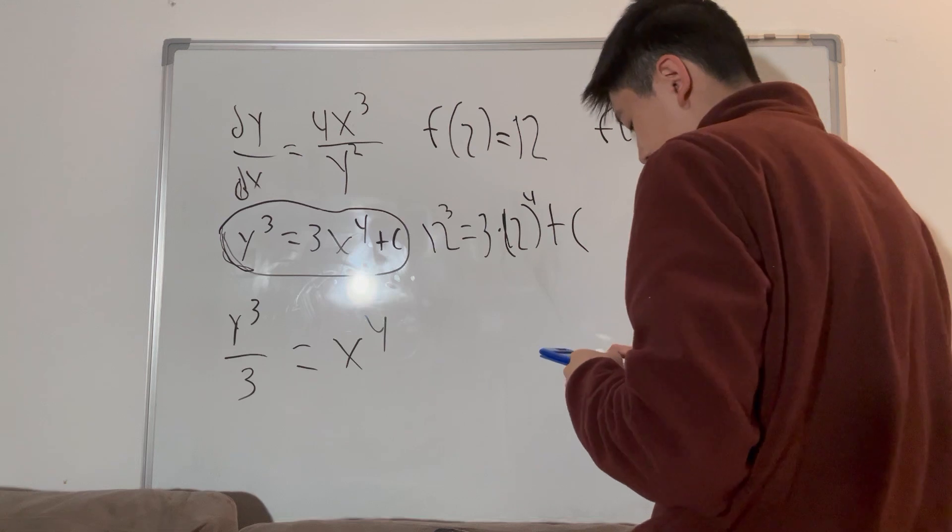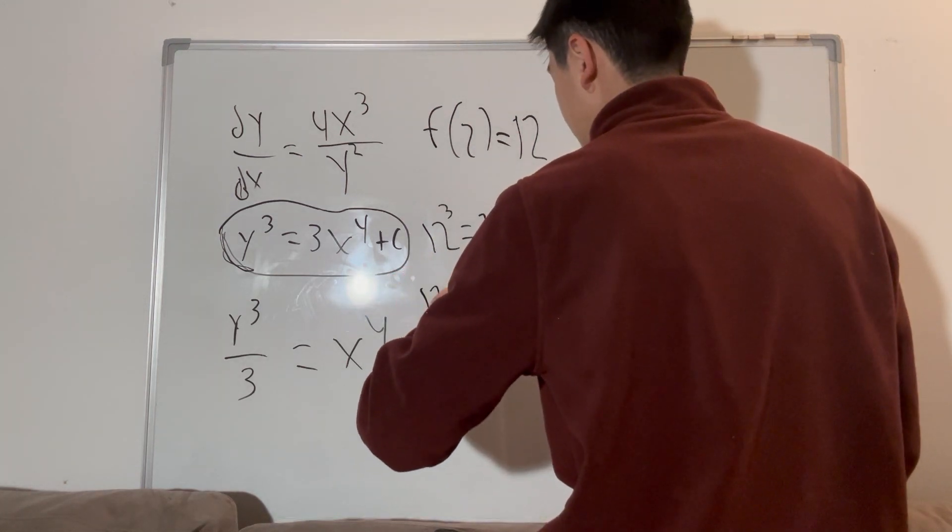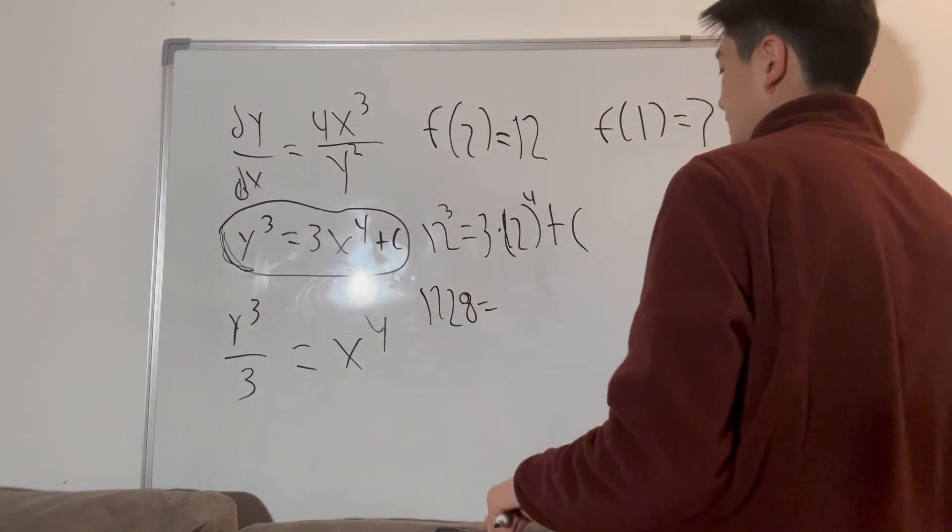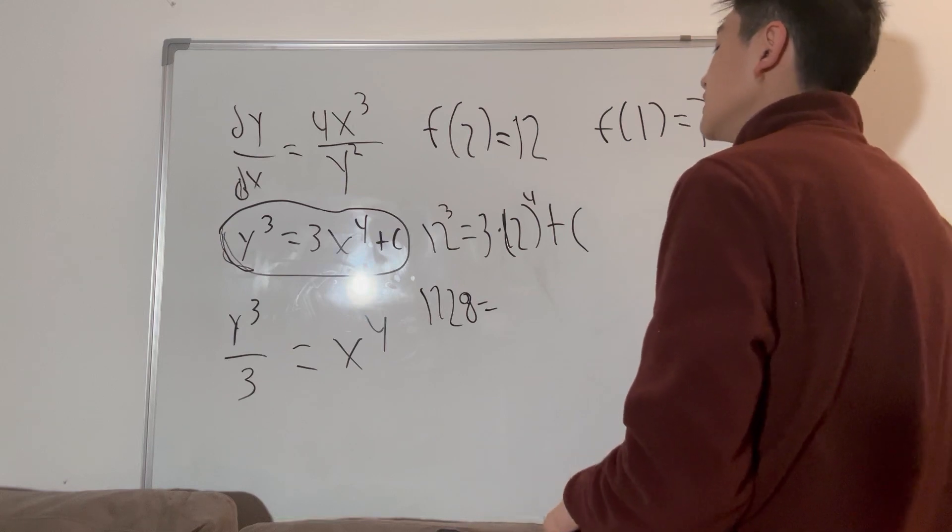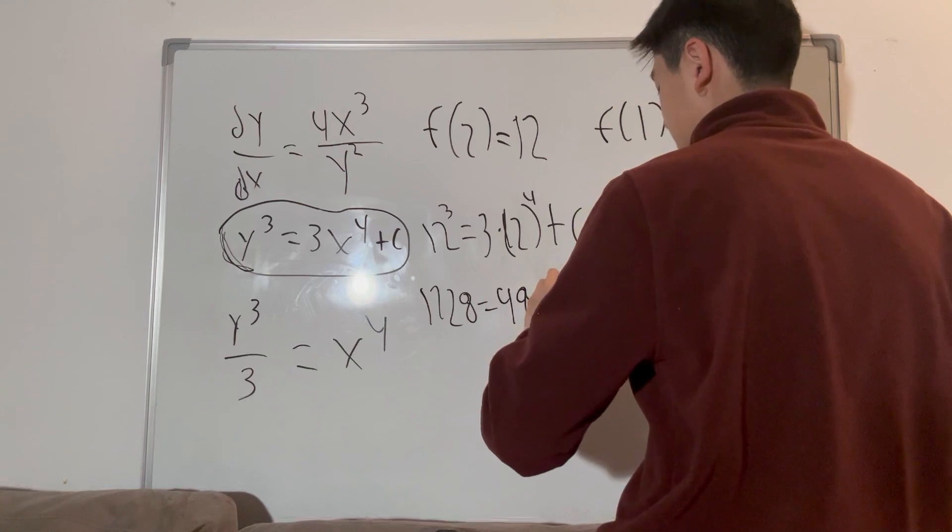So twelve cubed is 1728, and two to the fourth is 16. Three times 16 is 48 plus c.